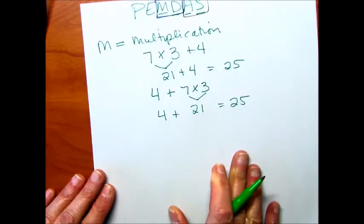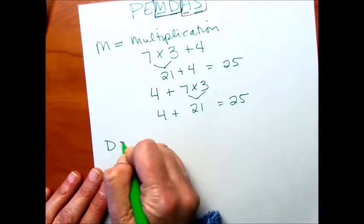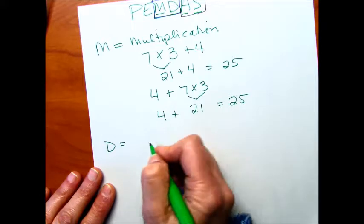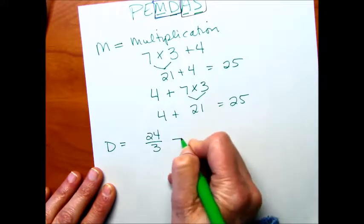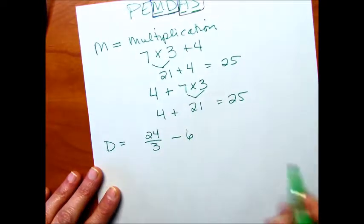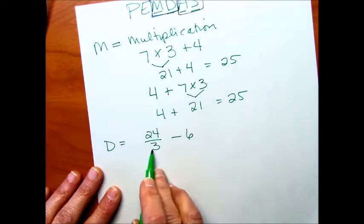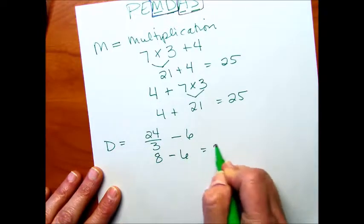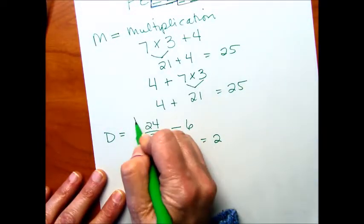Now, division is also that way. Division is going to come before addition or subtraction. So we might have something like 24 divided by 3 minus 6. Before I can subtract, I have to do this division problem. That's going to be 8 minus 6 equals 2. So D was for division.